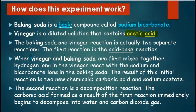Take your yellow highlighters and your blue highlighters and highlight all the bases and acids we mention in these slides. Baking soda is a basic compound called sodium bicarbonate; vinegar is a diluted solution that contains acetic acid. So once again there we see our base and our acid. The baking soda and vinegar reaction is actually two separate reactions. The first one is called an acid-base reaction. When vinegar and baking soda first mix together, hydrogen ions in the vinegar react with the sodium and bicarbonate ions in the baking soda. The result of this initial reaction is two new chemicals: carbonic acid and sodium acetate.